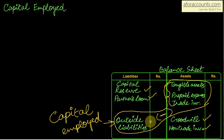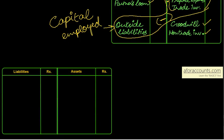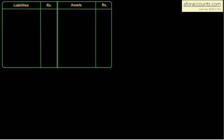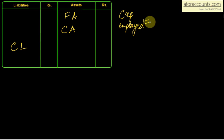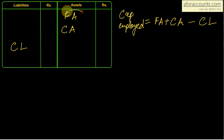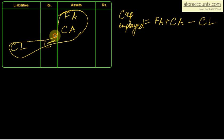Now, if in the balance sheet fixed assets and current assets are given separately along with current liabilities, then capital employed is equal to fixed assets plus current assets minus current liabilities. So add fixed assets and current assets, subtract the current liabilities, and this gives you your capital employed.